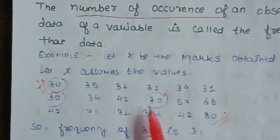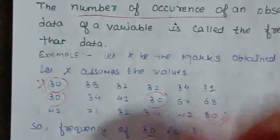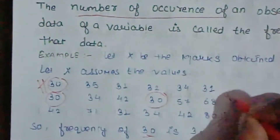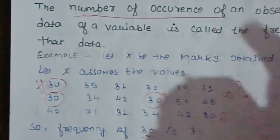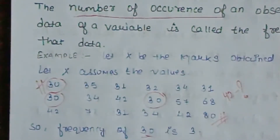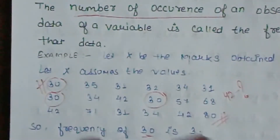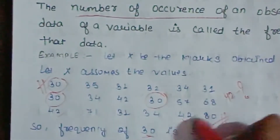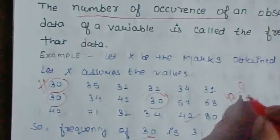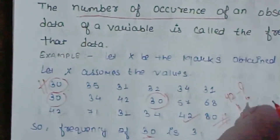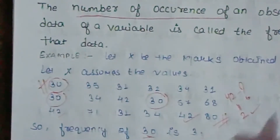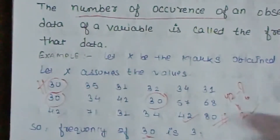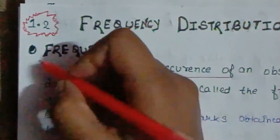Similarly, if we ask what is the frequency of 42, we simply calculate how many times 42 is repeated. Counting: 1 and 2 — it means 2. So the frequency of 42 is 2. That was the concept of frequency. Hope this is clear.